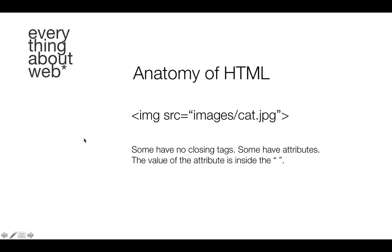Some tags have no closing tags, and some have attributes. With our image tag, you can see a value for the attribute inside quotes — in this case 'images/cat.jpeg'. So you could read this as: we have an image source which is the cat.jpeg image located inside our images folder.